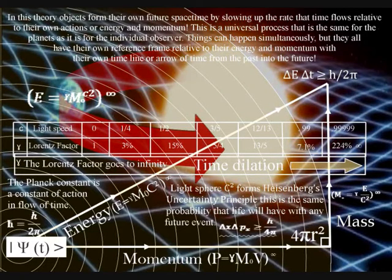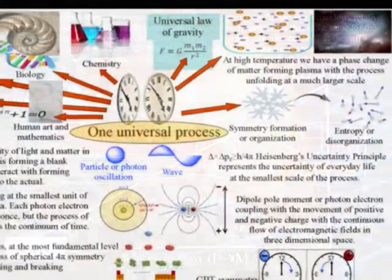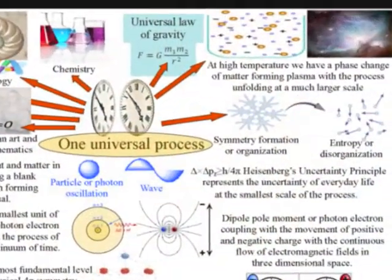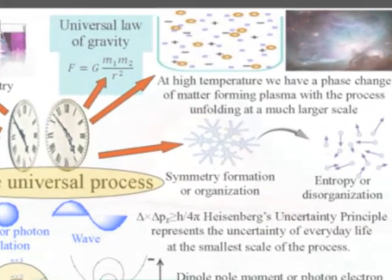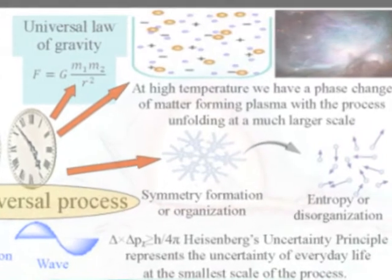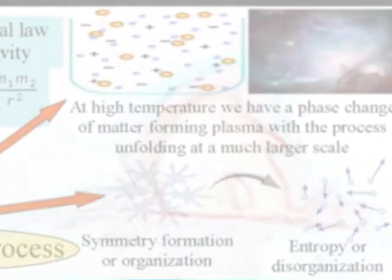I believe there are two reasons why this theory is difficult to comprehend. The first is represented in the top right-hand corner of the diagram. At high temperatures, we have a phase change of matter forming plasma, with the same fundamental process unfolding at a much larger scale.